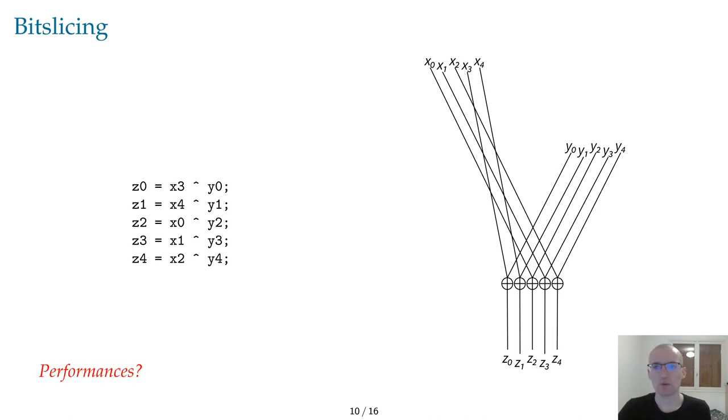The issue with this representation, however, is the low performance in software. What was initially 2 operations, a rotation and XOR, is now 5 XORs. In a real-life cipher, variables would probably be 32 or 64 bits rather than 5, and you would then have to compute 32 or 64 XORs rather than 1 XOR and 1 rotation.